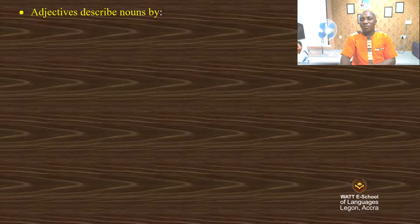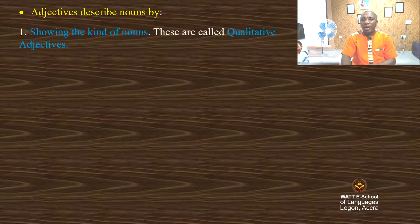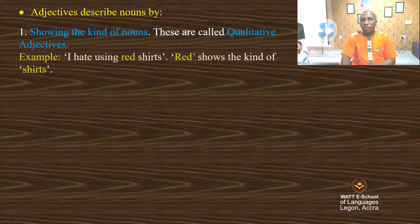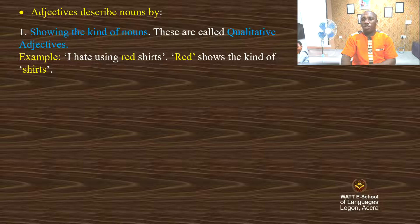Let's have a look at how adjectives describe nouns. First, adjectives describe nouns by showing the kind of noun. These are called qualitative adjectives. For example: 'I hate using red shapes.' The word 'red' shows the kind of shapes.